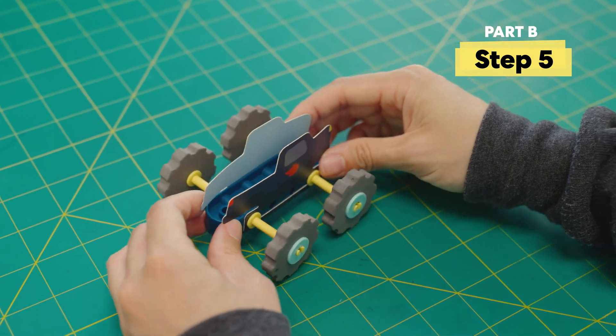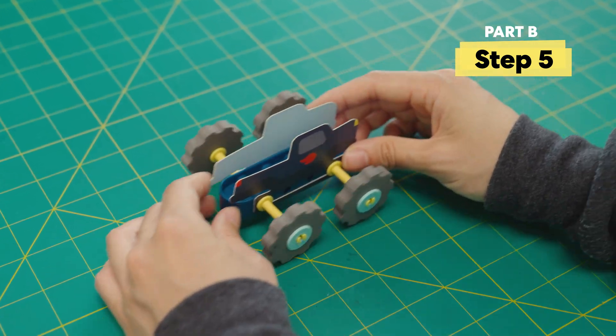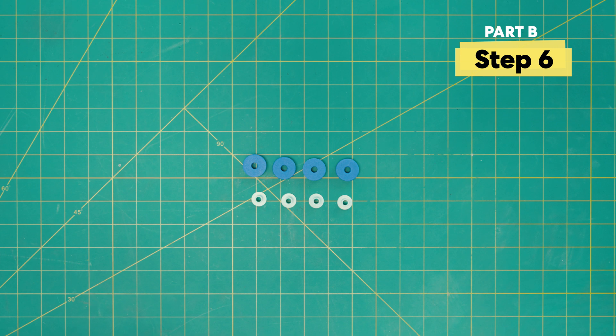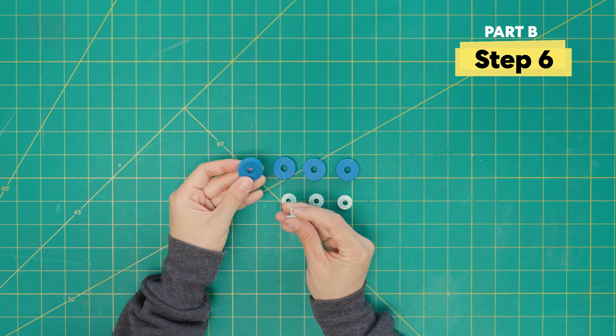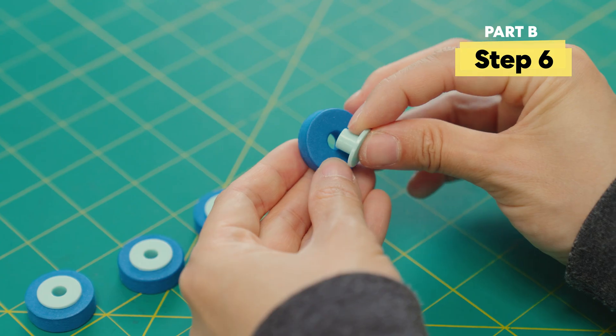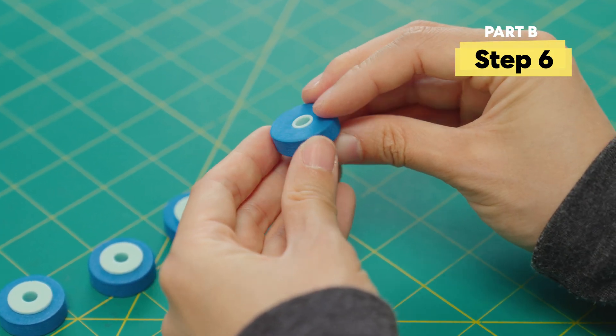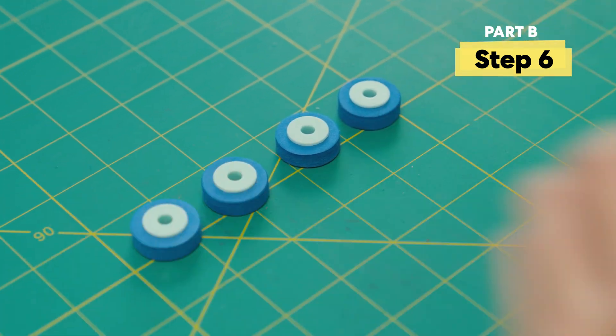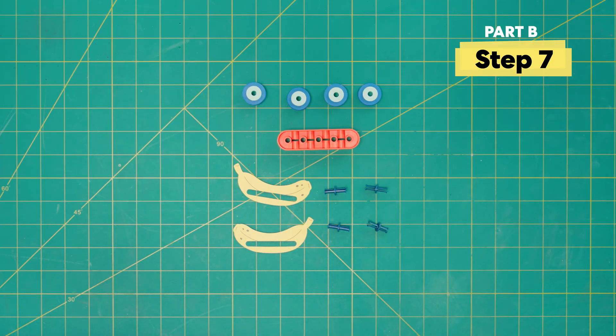Now that we have car number two down, let's make one more car. Let's make a silly one. We're going to first add the hubcaps to four more wheel pieces.